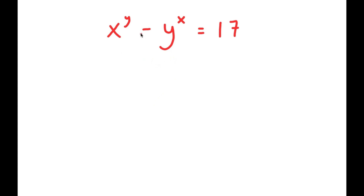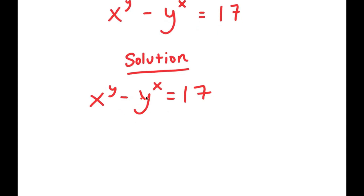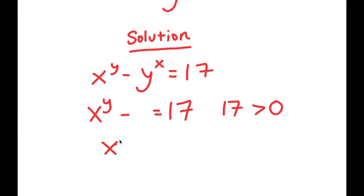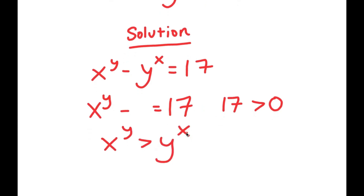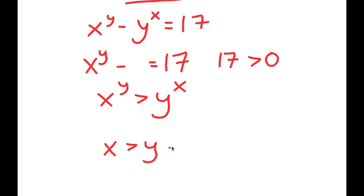In this problem, I have x to the power of y minus y to the power of x is equal to 17. Just by looking at this equation, notice that x to the power of y minus something equals 17, and 17 is greater than 0, meaning x to the power of y is greater than y to the power of x. This also means that x is greater than y and y is greater than 0.